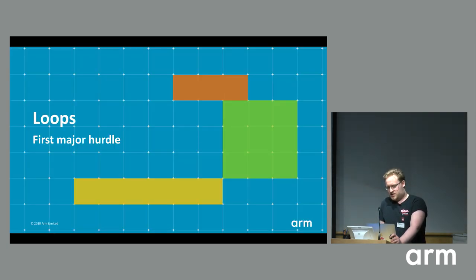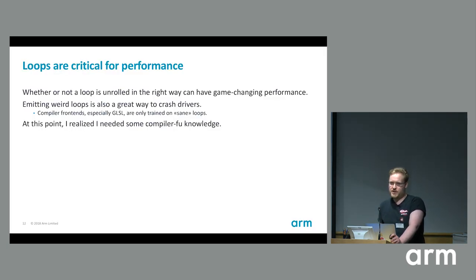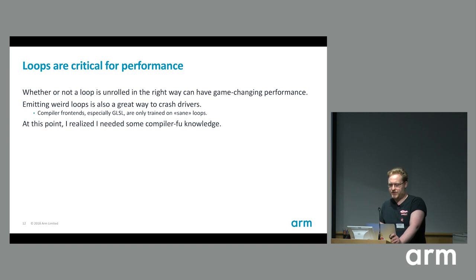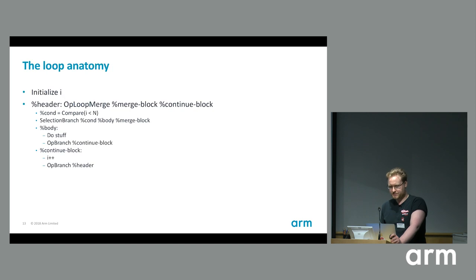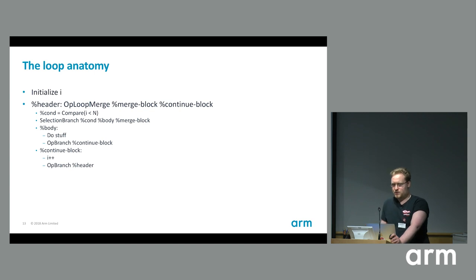Code generation seems simple, but there are some major issues. The first issue I had to tackle was loops — loops are really critical for performance, and emitting weird loops is a great way to crash drivers. An intermediate representation doesn't really have a concept of a for loop, while loop, or do-while. So I actually need to translate IR code into something that looks sensible in GLSL. A loop in SPIRV has a loop header block, a merge block, a continue block, and branch logic for entering or exiting.